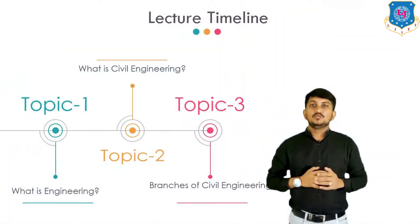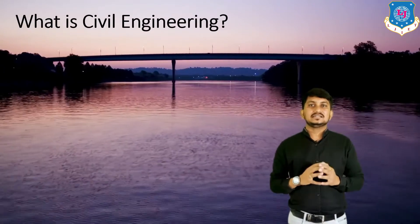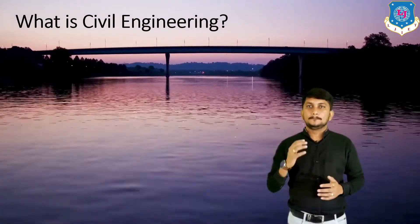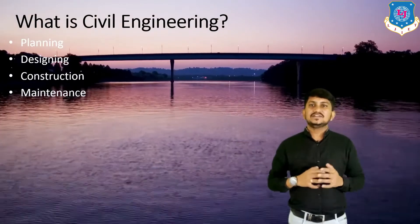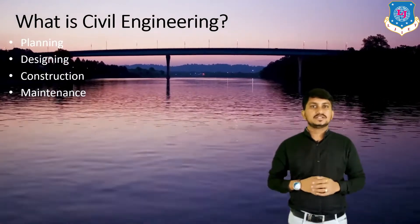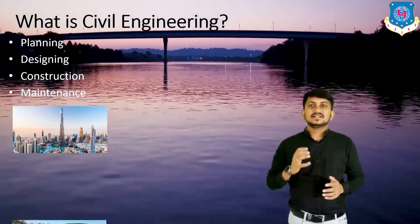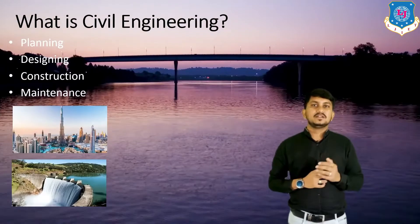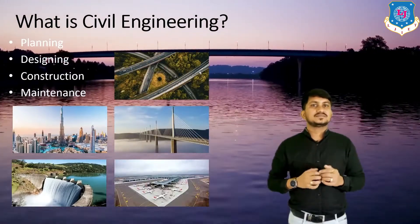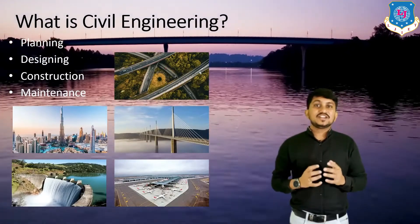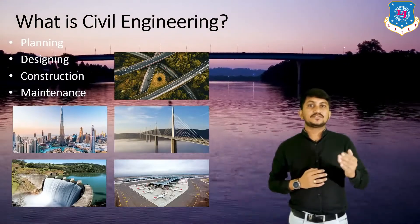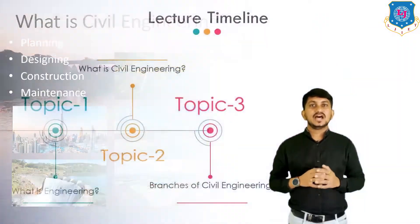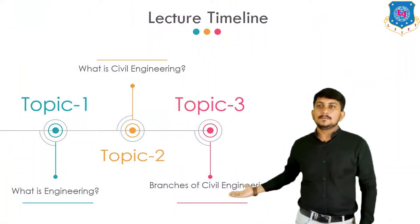Now we will move to our second topic: what is civil engineering? Civil engineering is a professional engineering discipline that deals with planning, designing, construction, and maintenance of physical and naturally built structural components of buildings, including public works such as dams, canals, roads, railways, bridges, airports, service systems, pipelines, etc. Civil engineering is considered the second oldest engineering discipline after military engineering, and it was separated from military engineering during the 18th century.